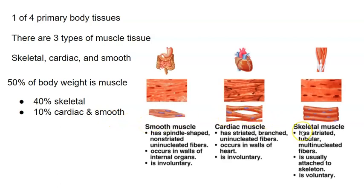Skeletal muscle is just like what you'd expect — your biceps or your quads — muscles that contract and help you move your joints and bones. Cardiac muscle is found in your heart. Smooth muscle is found in areas like the gastrointestinal tract, the vaginal wall, arteries, veins, and around respiratory passages, where it constricts and dilates to open passages.